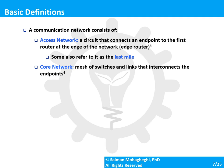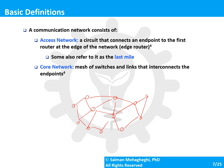A communication network consists of two subnetworks: the core and the access network. The core network is a mesh of switches and links that provides connectivity across the entire network — forming the backbone. Individual devices communicate through this core network. The access network is the network that connects each user, endpoint, or device to the core network.